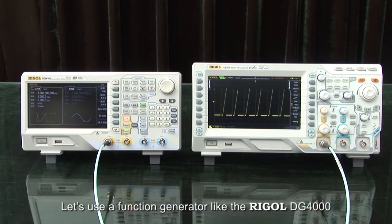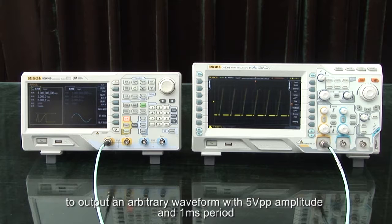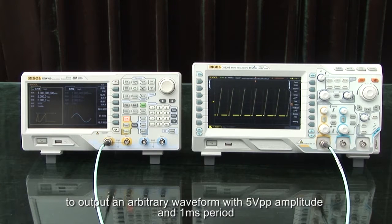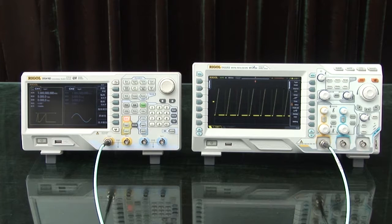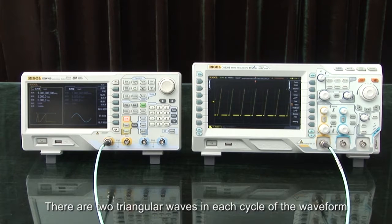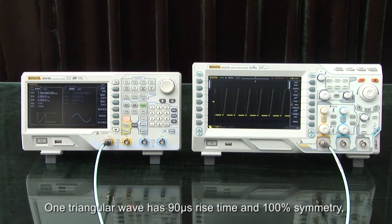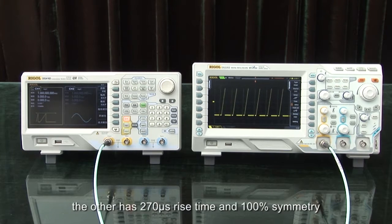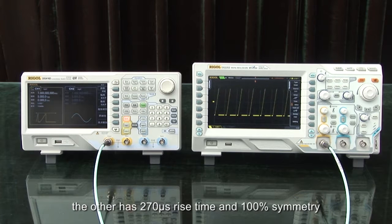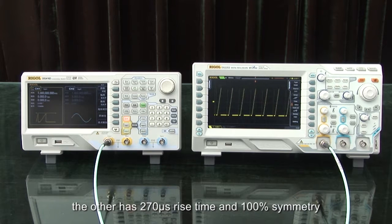Let's use a function generator like the Rigol DG-4000 series to output an arbitrary waveform with 5 volt peak-to-peak amplitude and 1 millisecond period. There are two triangular waves in each cycle of this waveform. One triangular wave has a 90 microsecond rise time and 100% symmetry. The other has a 270 microsecond rise time and 100% symmetry.